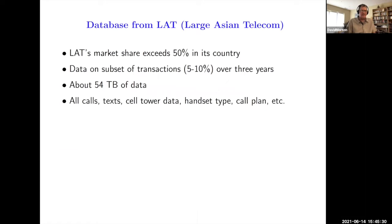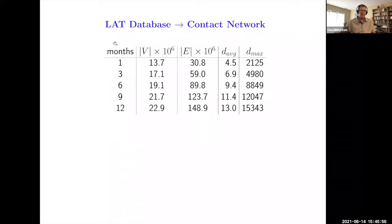We had a really nice data set from a large Asian telecom where the market share was about 50% in that country. They had sampled about 5% to 10% of transactions over a three-year period, and those included calls, text, anonymized, and even had handset or cell tower data, handset type, and so forth. If we only look at the first month, then there were about 13 million nodes that showed up and about 30 million edges. This was the average degree and the max degree. Someone in one month called over 2,000 different people. And over three months up to 12 months, you can see that this grows to about roughly 50% of this unnamed Asian country's population.